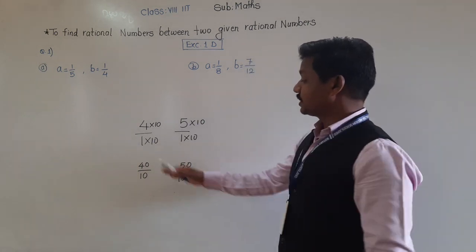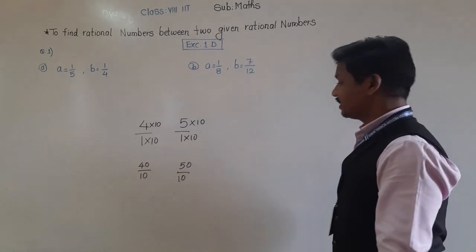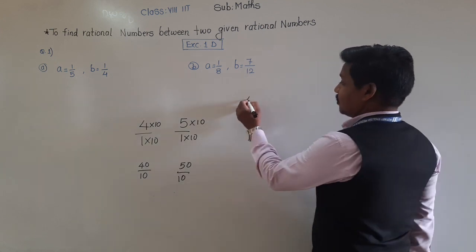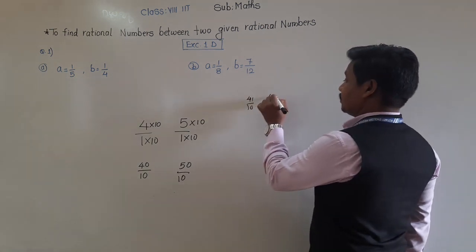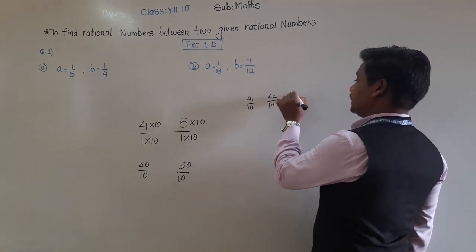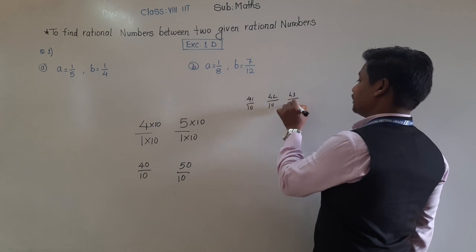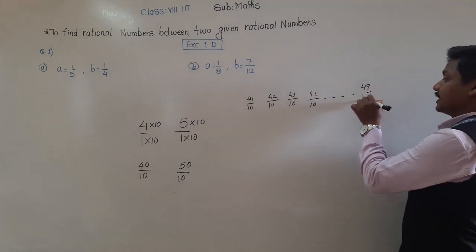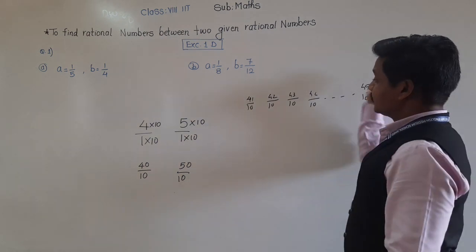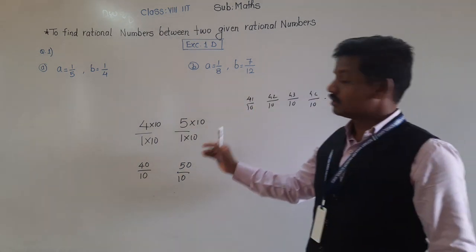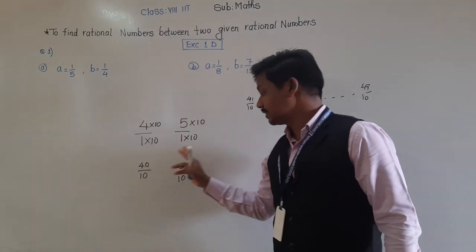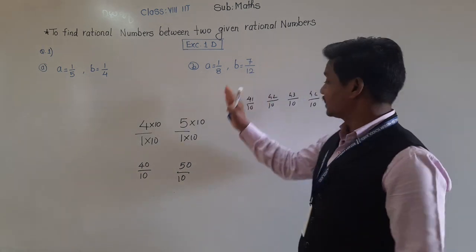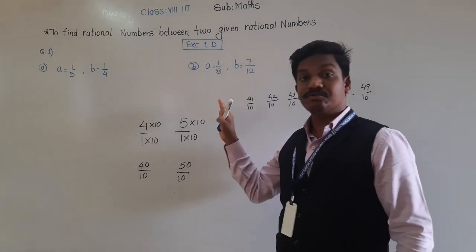Now between 40/10 and 50/10, which rational numbers are there? We have 41/10, 42/10, 43/10, 44/10, and similarly up to 49/10. So these rational numbers occur between 40/10 and 50/10 — that is, they occur between four and five.